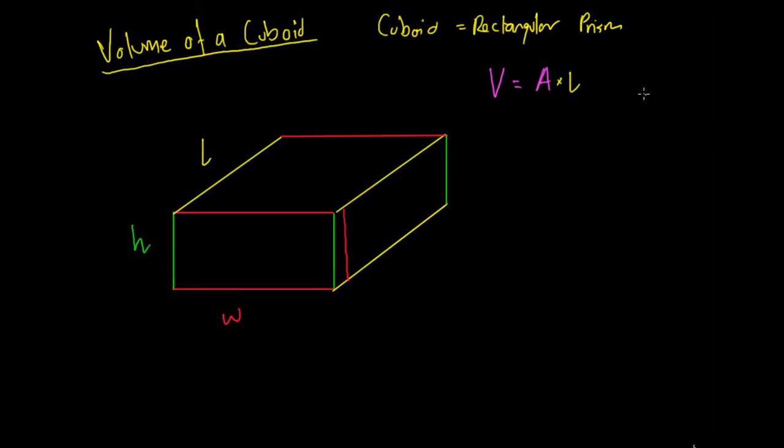We also know that the area of this shape is equal to the height multiplied by the width. So if the area equals height times width, the volume of the shape, we just substitute in our area. The volume is going to be the height multiplied by the width multiplied by the length.